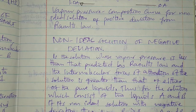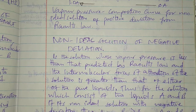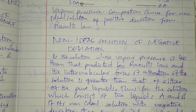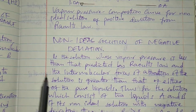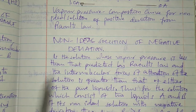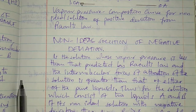In the non-ideal solution of negative deviation, most things are just the reverse of what we discussed in the solution of positive deviation. The non-ideal solution of negative deviation is the solution whose vapor pressure is less than that predicted by Raoult's law, and the intermolecular force of attraction of the solution is greater than that of the pure liquids.